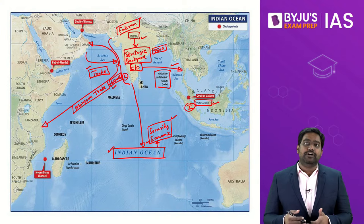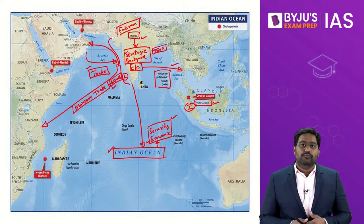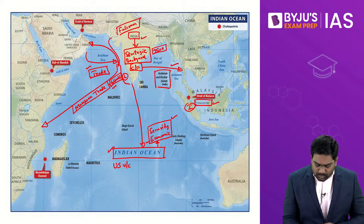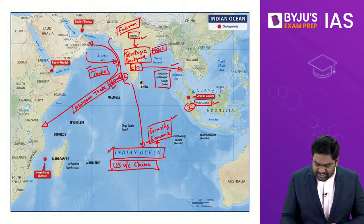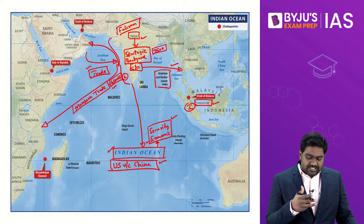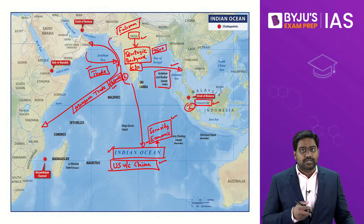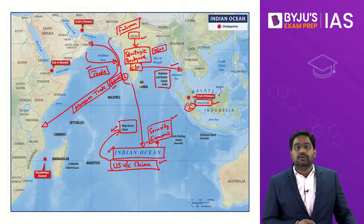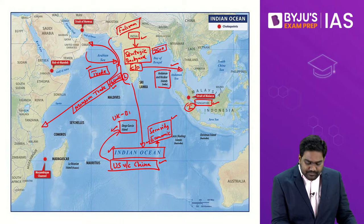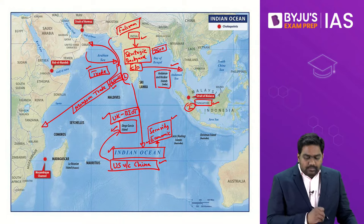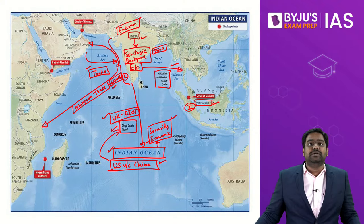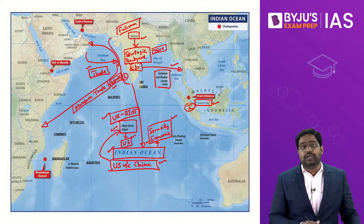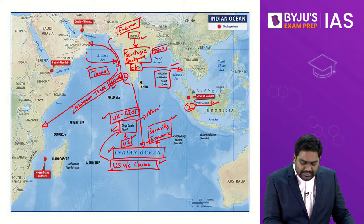Today, the Indo-Pacific has emerged as the global hub for geopolitics and economic growth. There is intense competition across the Indo-Pacific between major powers such as the US and China. These external powers are building a significant military and strategic presence in the Indian Ocean. For example, the Diego Garcia Island is a British overseas territory where the US has built a major naval base after Britain leased it to the US post World War II.